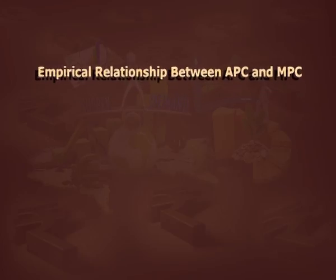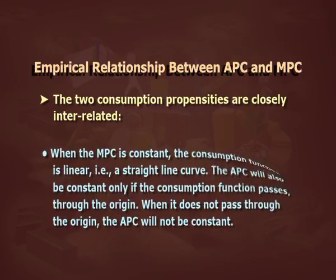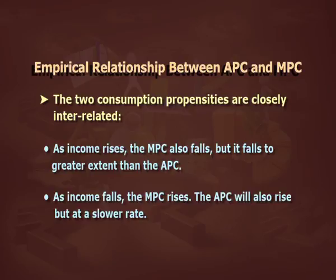Empirical relationship between APC and MPC. The two consumption propensities are closely interrelated. Firstly, when MPC is constant, the consumption function is linear; APC will be constant only if the consumption function passes through the origin. Secondly, as income rises, MPC falls to a greater extent than APC. Thirdly, as income falls, MPC rises, and APC will also rise, but at a slower rate.